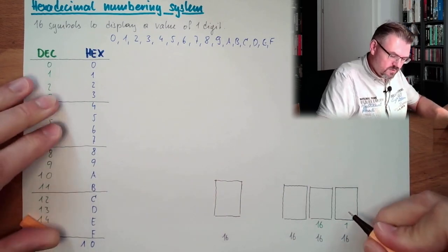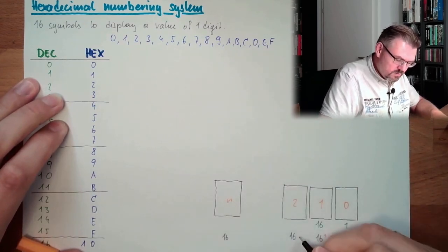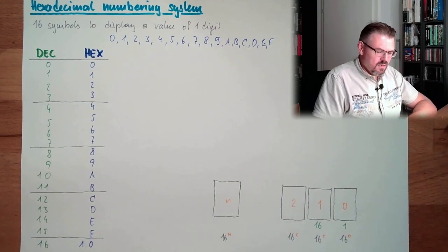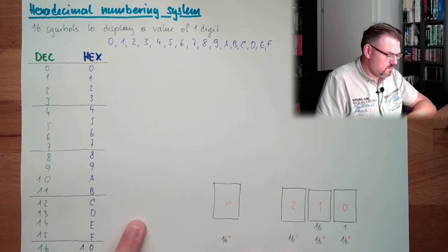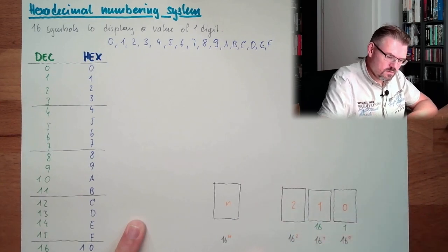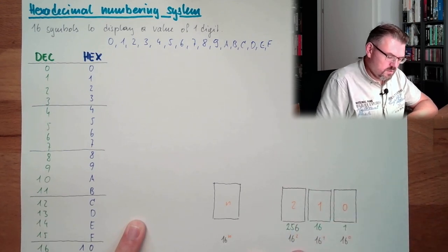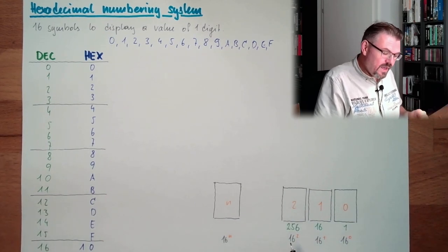If this is the position 0, then this is 16 raised by the power of 0. This is position 1, 2, n. And if we calculate this, 16 squared, 16 times 16, this is 256. And so on, and so on, and so on.